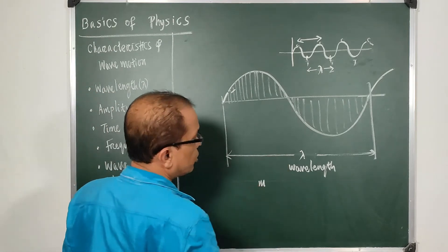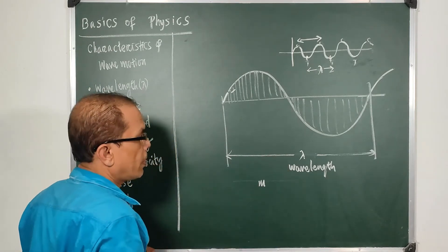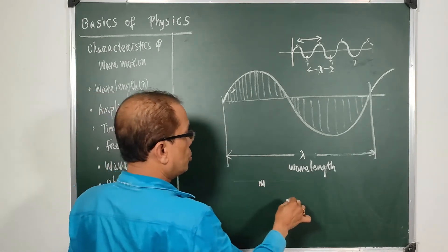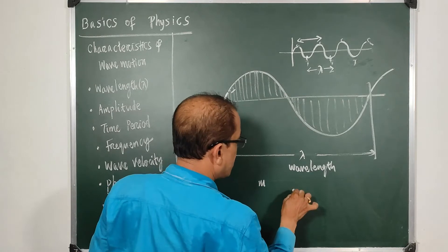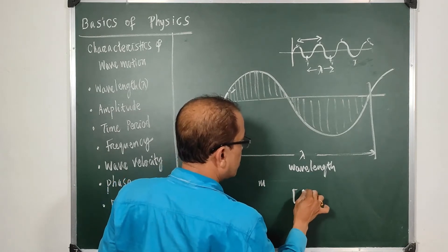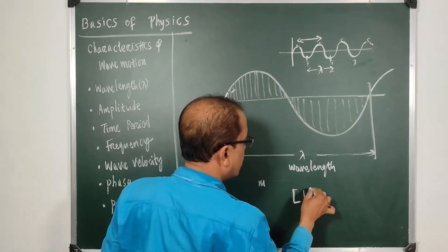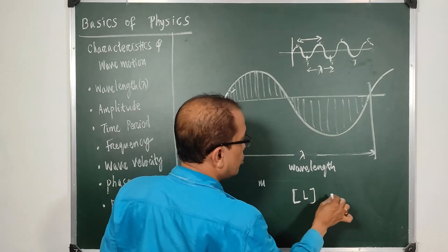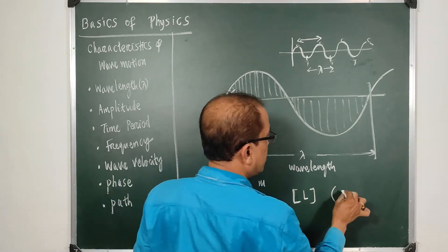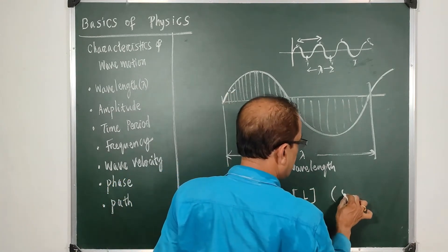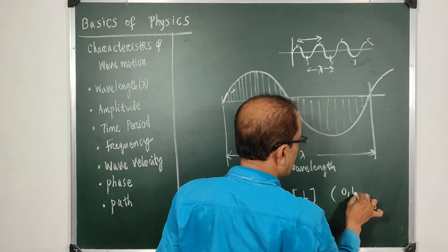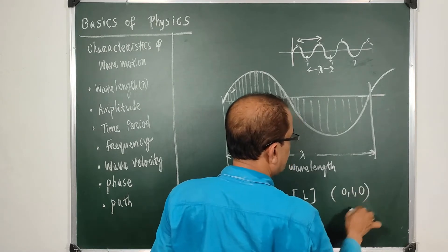The distance between the two same-phase particles is known as lambda, the wavelength. The unit of wavelength is meters, and its dimension is L¹, written as [M⁰ L¹ T⁰].